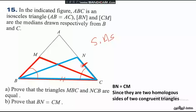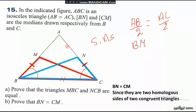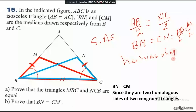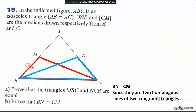For side-angle-side, we now need to prove NC equals MB. Since AB equals AC — the two legs of the isosceles triangle ABC — the half of AB is BM and the half of AC is CN. So BM and CN are both equal, each equaling AB/2 and AC/2 respectively. The halves of equal quantities are equal, so BM equals CN.